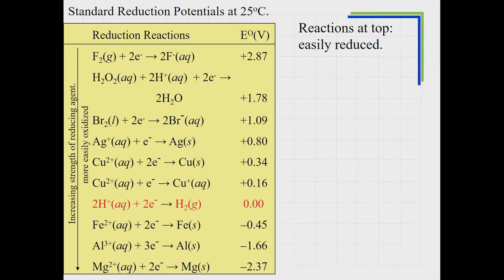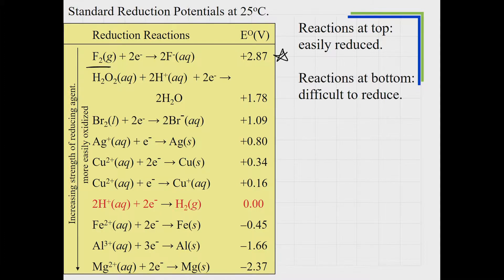Reactions at the top are easily reduced—they like to gain electrons. Think about fluorine on the periodic table; it really likes electrons, making it the most easily reduced substance. Reactions at the bottom are difficult to reduce. Magnesium loves being a 2+ charge; forcing two electrons onto it is unfavorable. So things at the bottom are difficult to reduce—that is the standard way these reduction potentials are arranged.